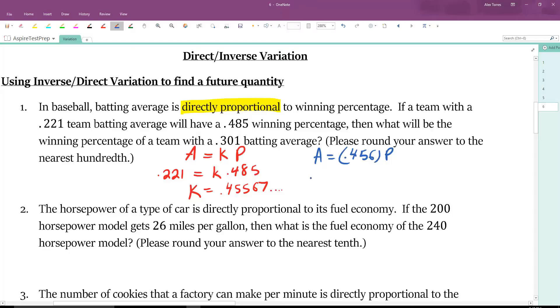Now, the question is, what will be the winning percentage when the batting average is .301? We can put .301 in for the average. Keep our k. K stands for constant. And what that means is, once you find k, it always stays the same. So that's why we were able to plug it into this new equation.